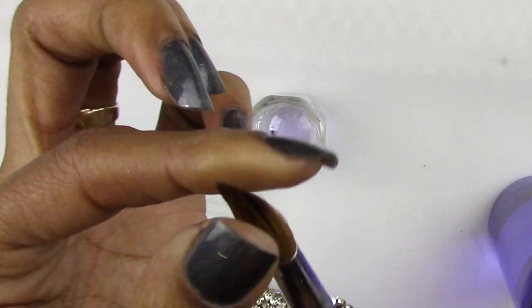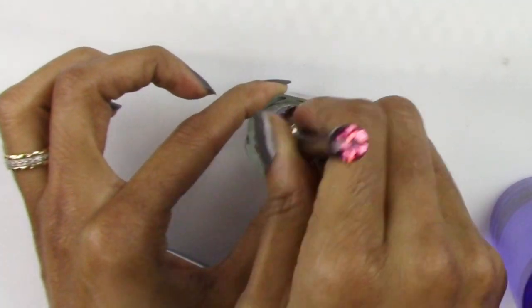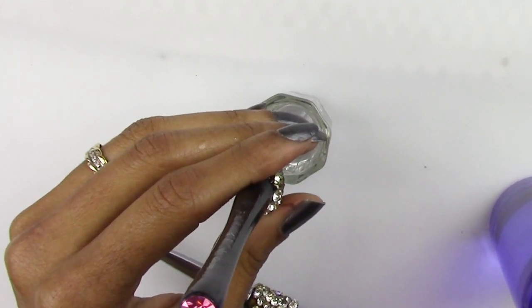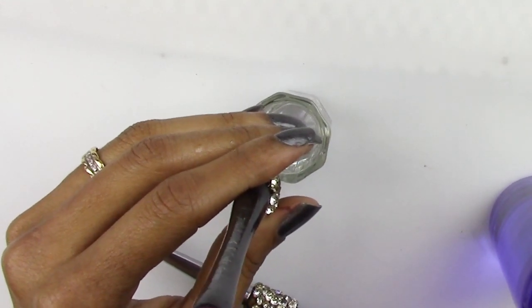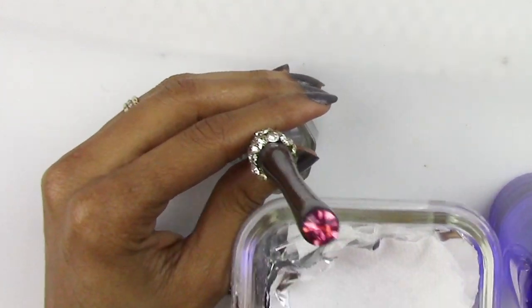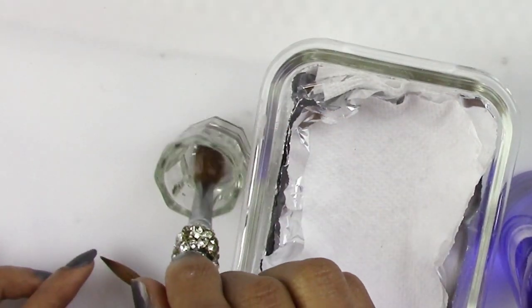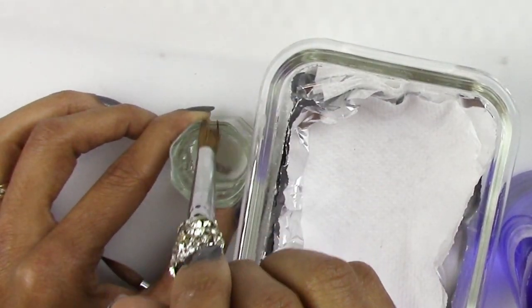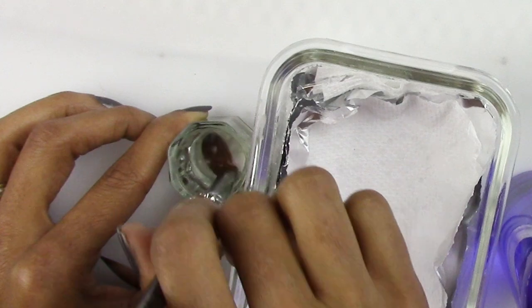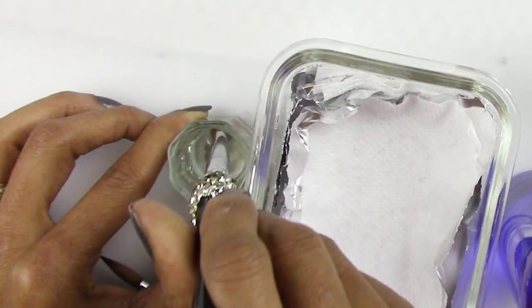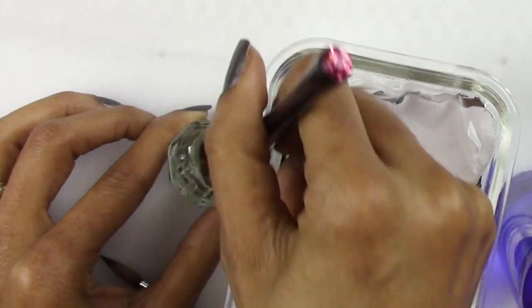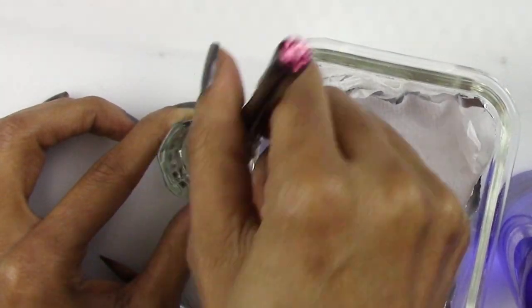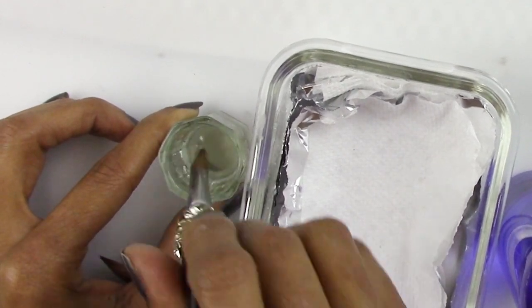Now you see how that brush kind of sticks together. Now I'm going to clean it. You clean your brush—you dip like this and you go to the side. Now look how that monomer changed colors. It don't even have that purple tint in there anymore.